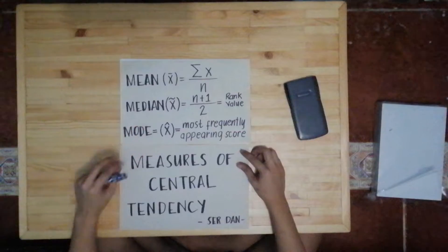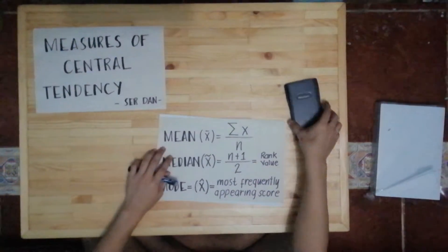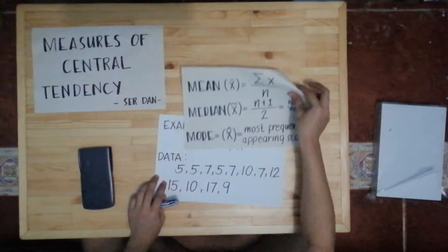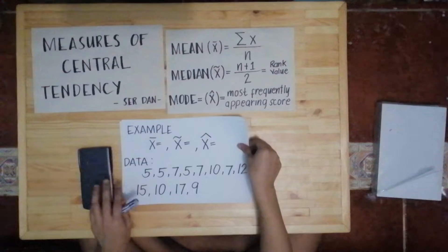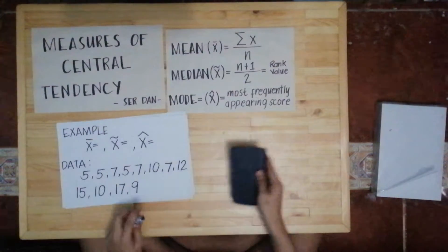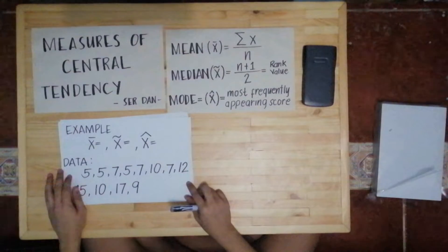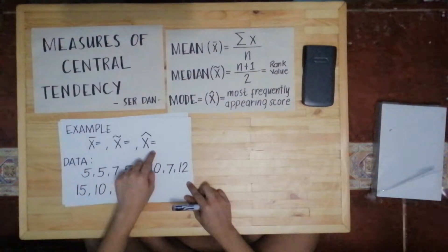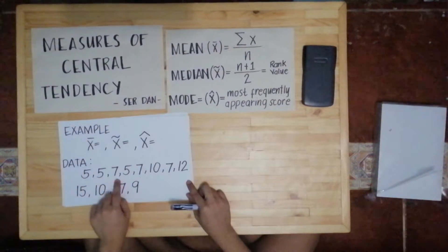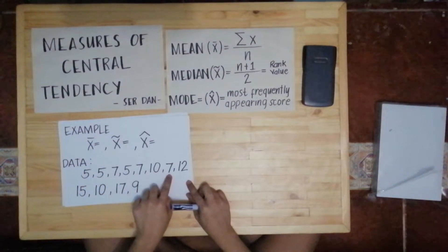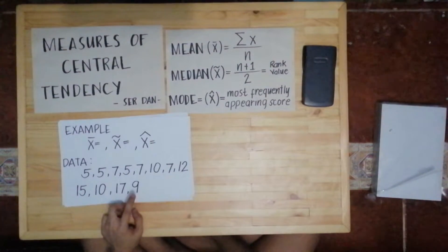Take note, we are studying ungrouped data for now. For example number 1, we have to find out the mean, the median, and the mode. These are the data: 5, 5, 7, 5, 7, 10, 7, 12, 15, 10, 17, 9.